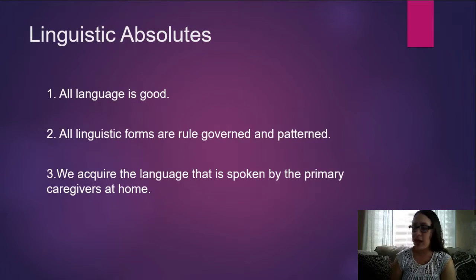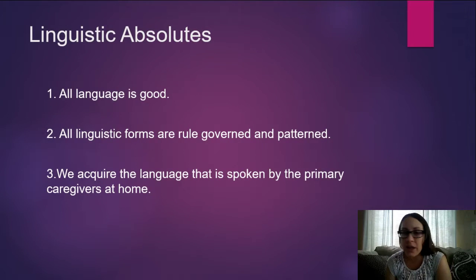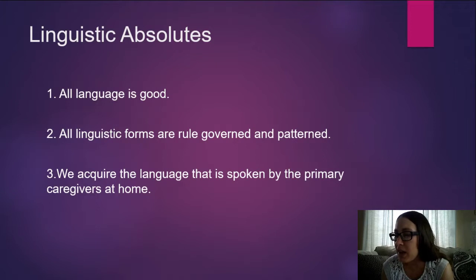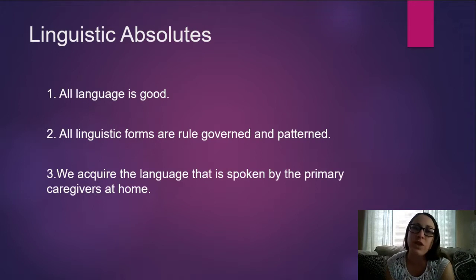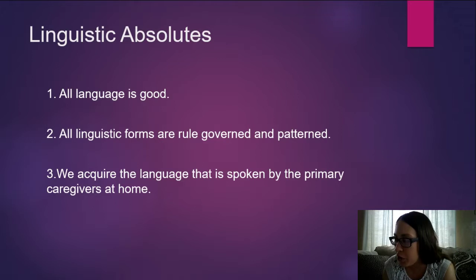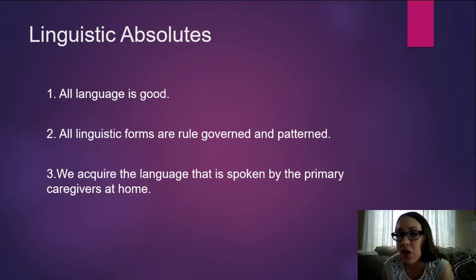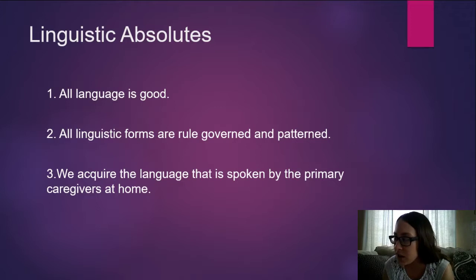There are three linguistic absolutes. Number one: all language is good, meaning that language is not bad, improper, wrong, or incorrect — there is no such thing as a bad language. Number two: all linguistic forms are rule-governed and patterned. These linguistic forms are not made up; they're not randomized or created for no purpose. The range of rules covers all dimensions of language, including phonics, morphemes, syntax, semantics, pragmatics, and discourse. Each of these dimensions has its own set of rules, which only points out the depth of linguistic forms.